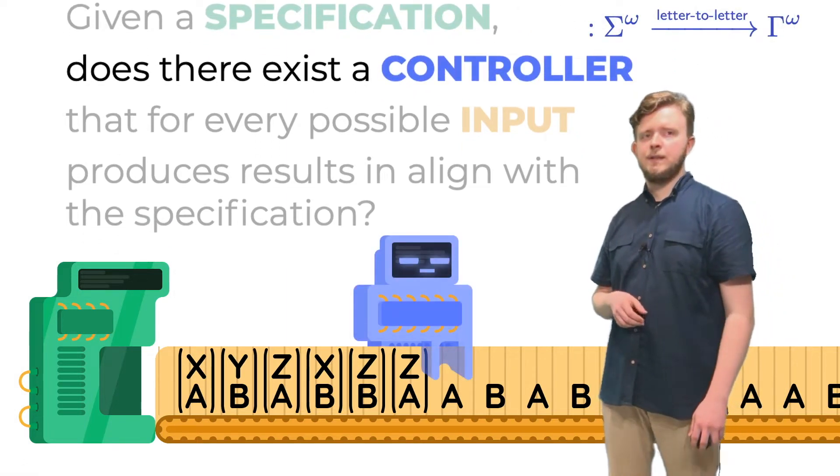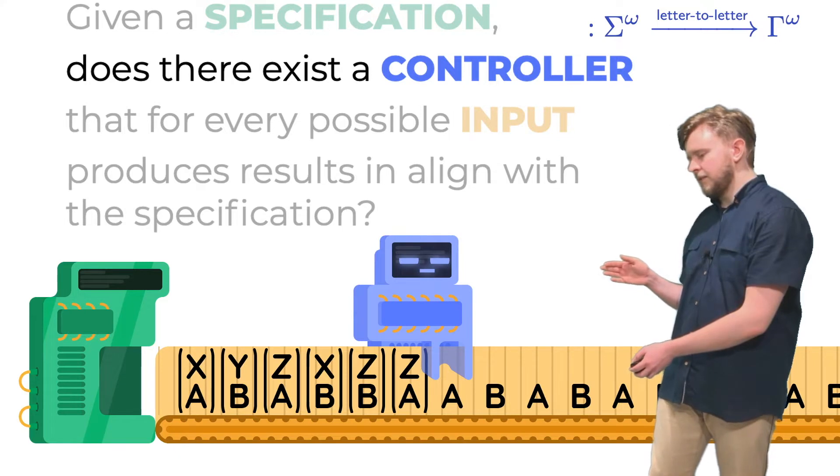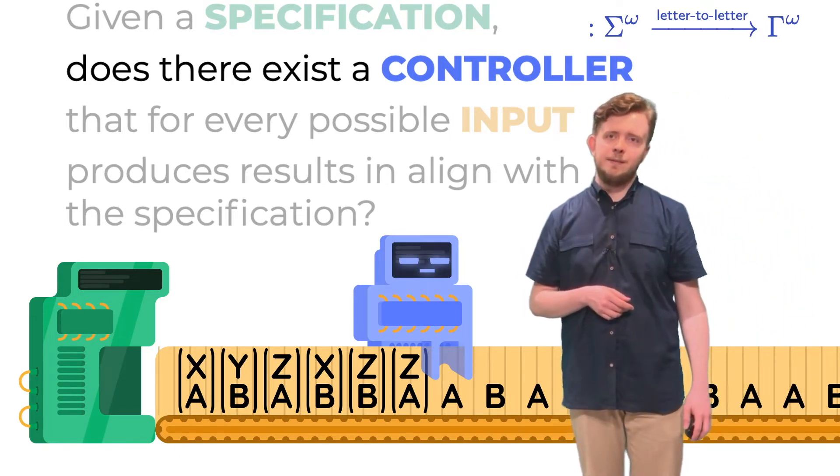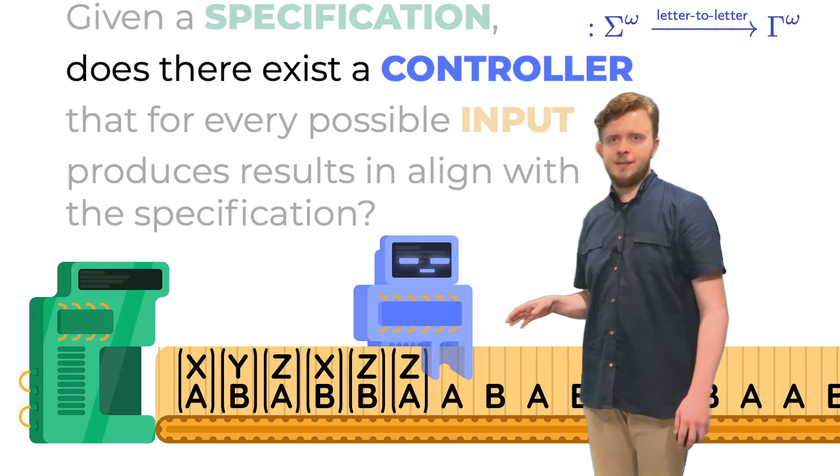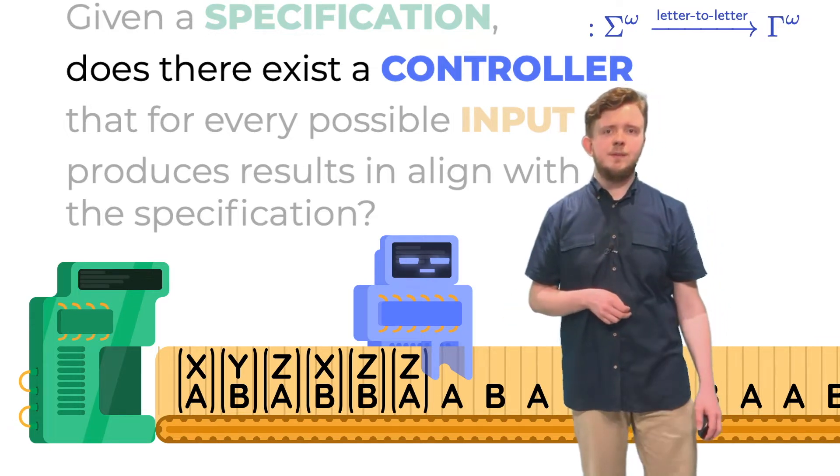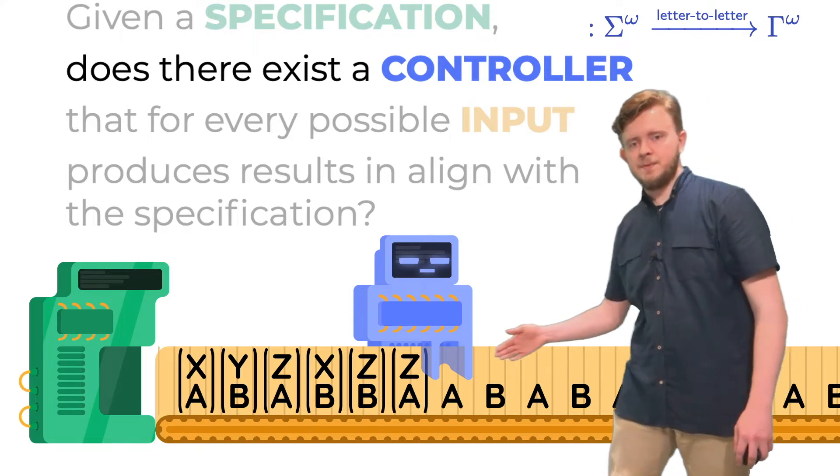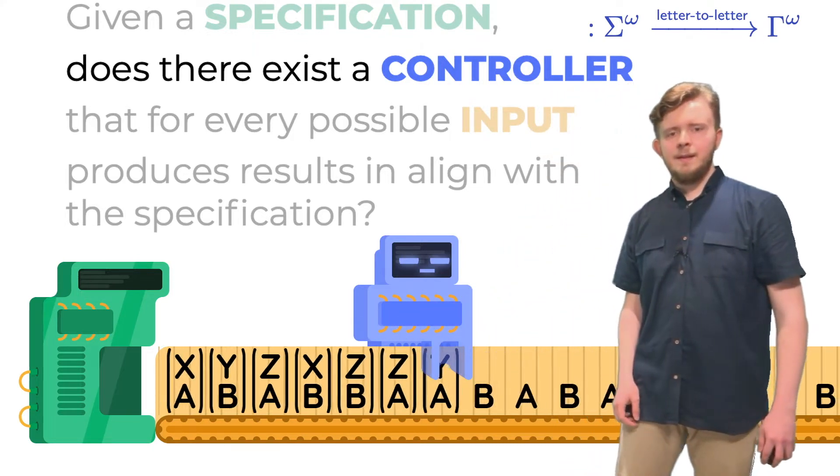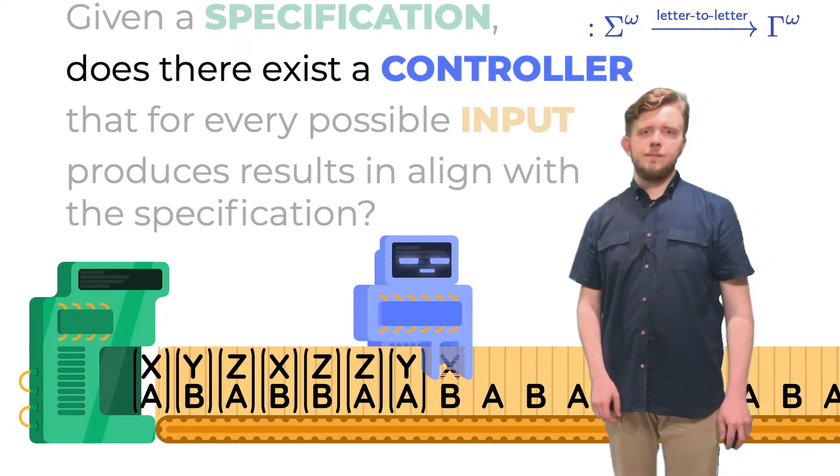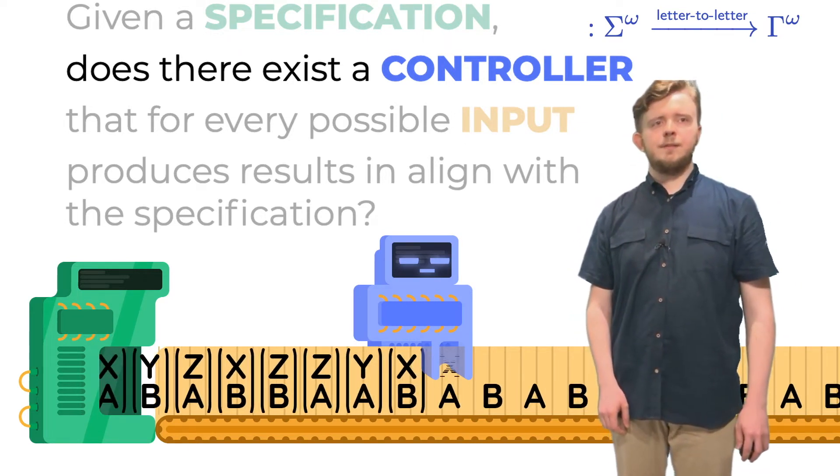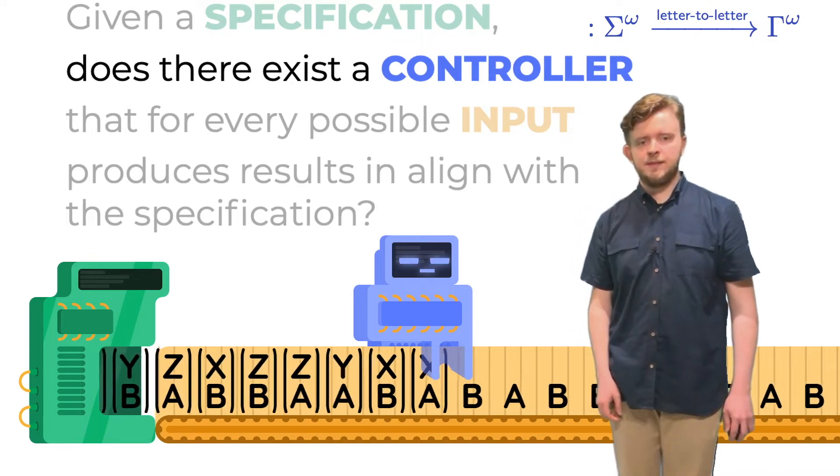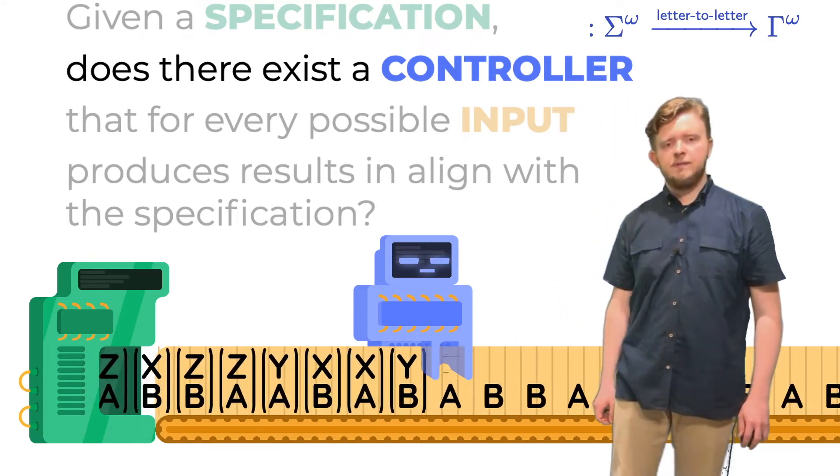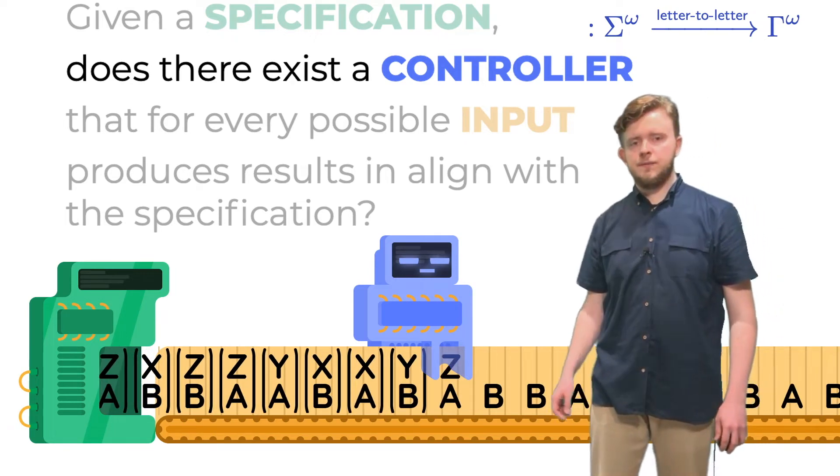And the missing part is a controller. This is a very simple machine, a letter-to-letter transducer to be exact. It reads the input and based on its internal state and the input letter it just read, it produces a new letter of this upper string here. As you can see, it operates on a letter-to-letter basis, that is, for each letter of the input, it produces exactly one letter of that upper string here.